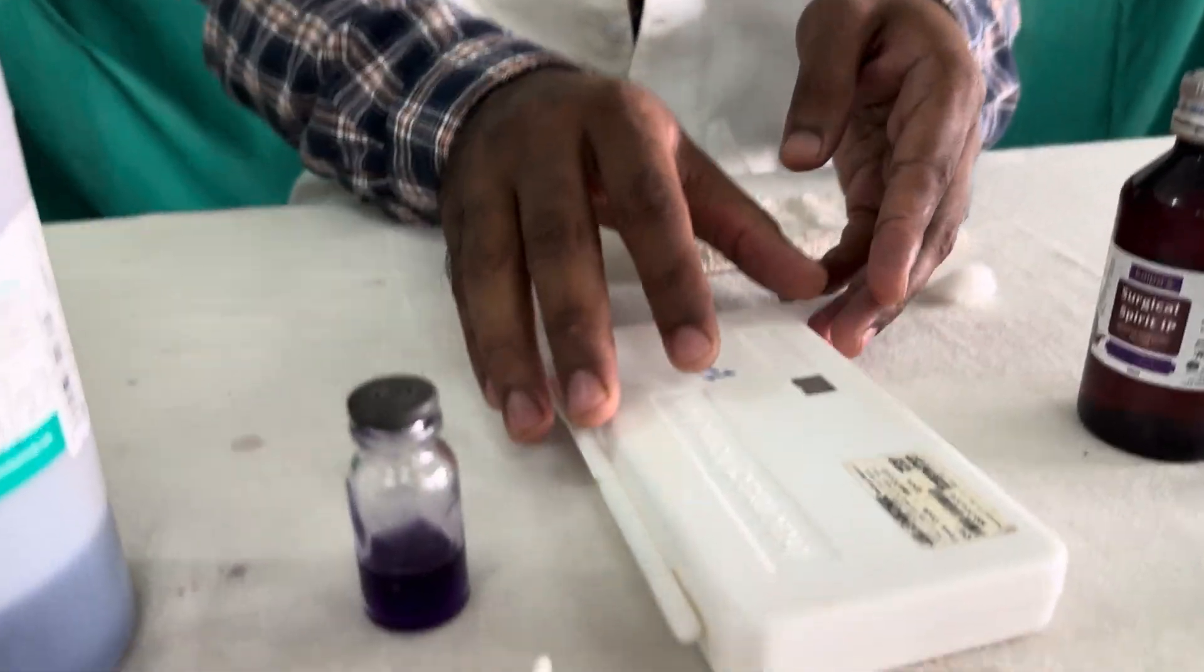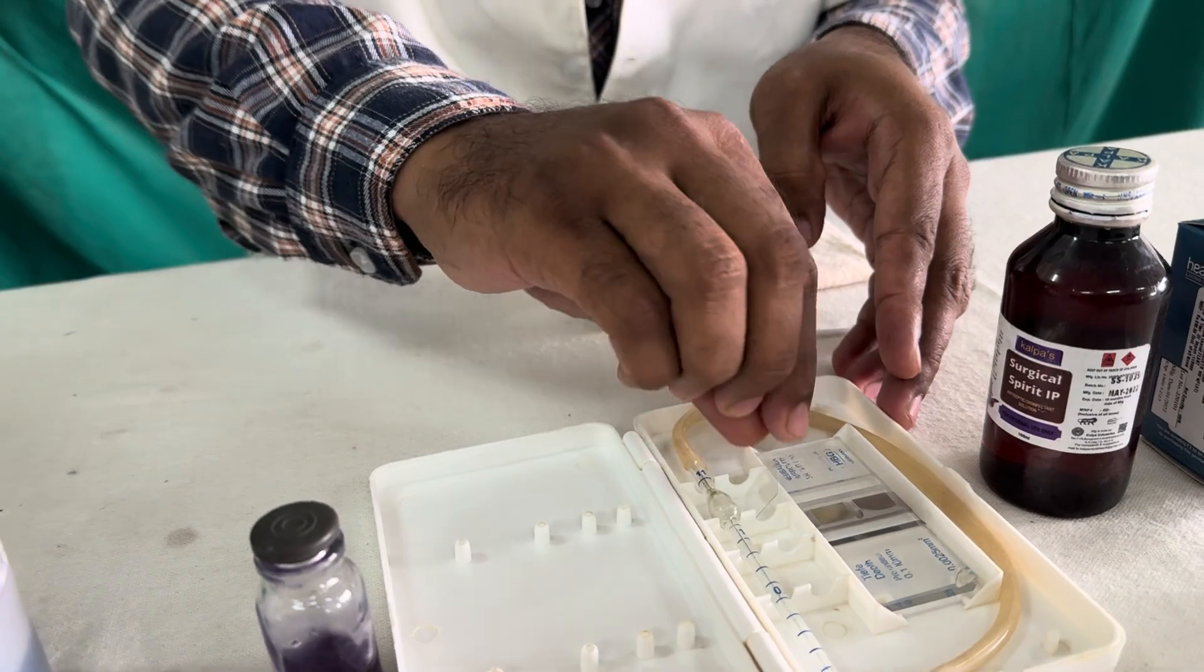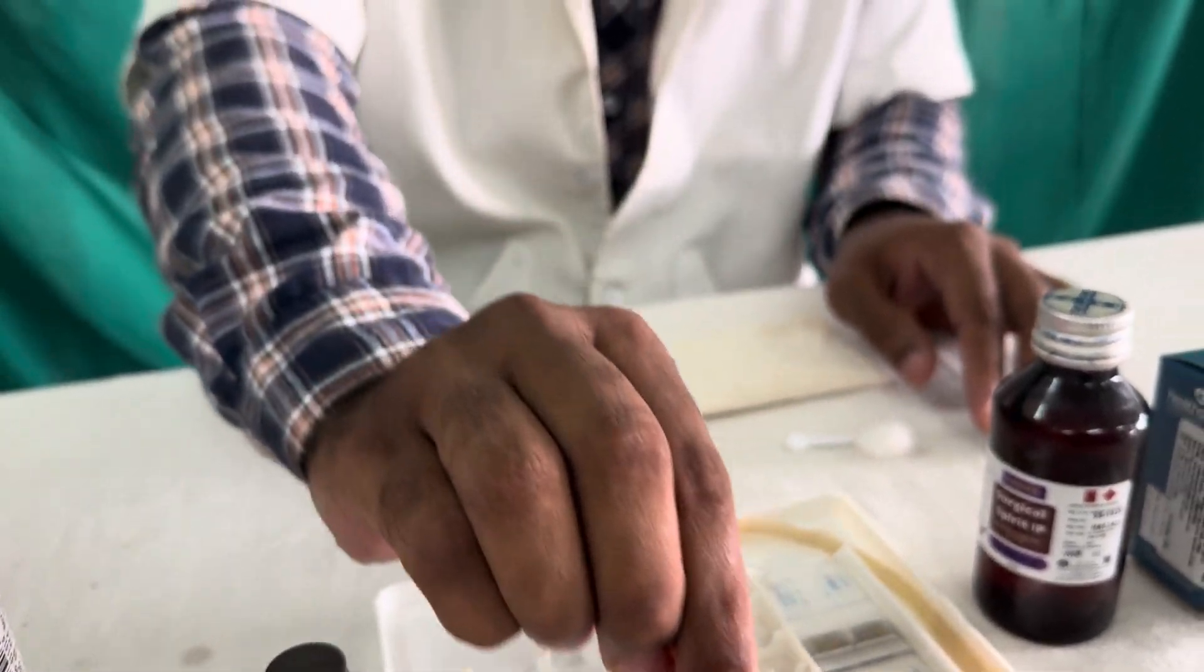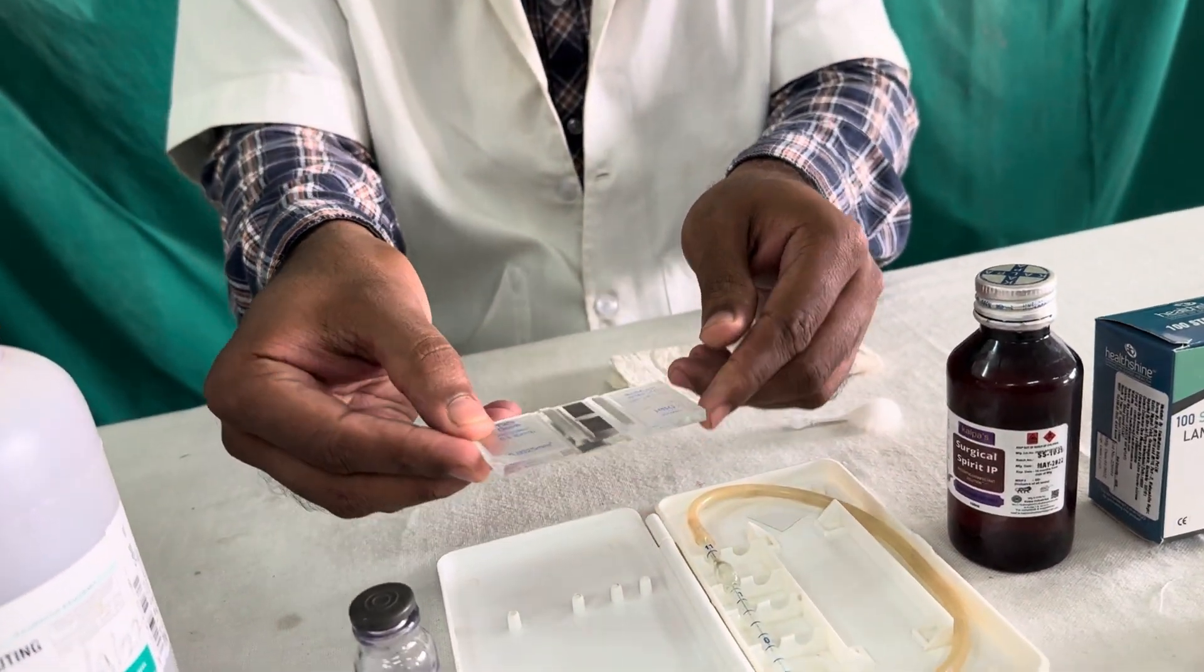Now the most important thing here is the hemocytometer. So, in this box let us see what is there, there is a cover slip, then Neubauer chamber. In fact it is an improved Neubauer chamber.